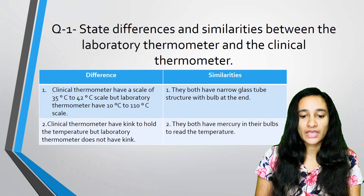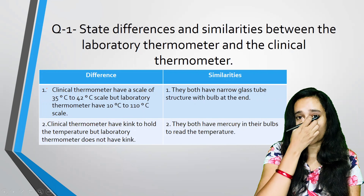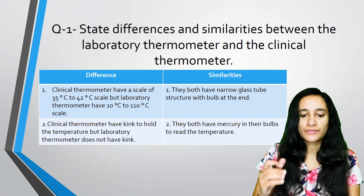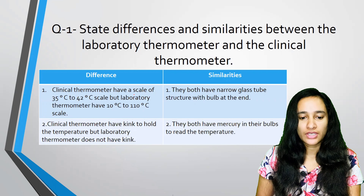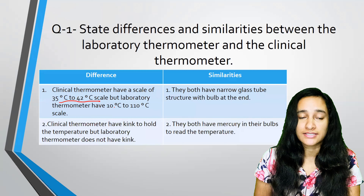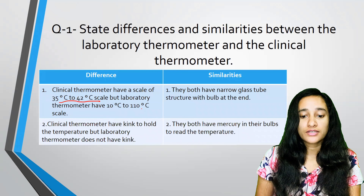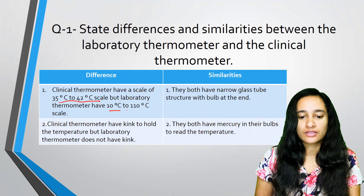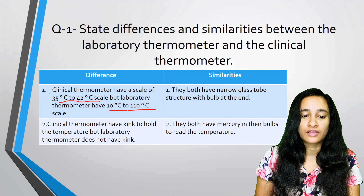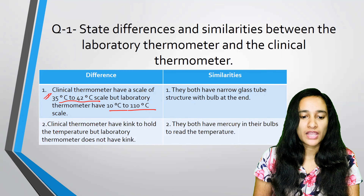What is the difference between both thermometers? What is the scale of the clinical thermometer? The clinical thermometer has a scale of 35 degrees Celsius to 42 degrees Celsius. The laboratory thermometer has a scale of 10 degrees Celsius to 110 degrees Celsius. This is the first difference.